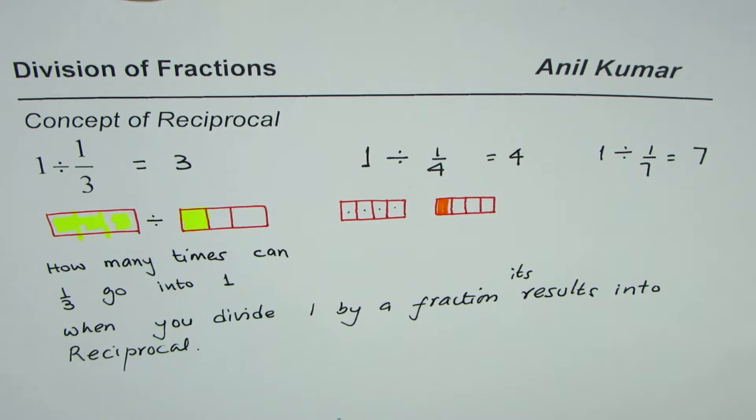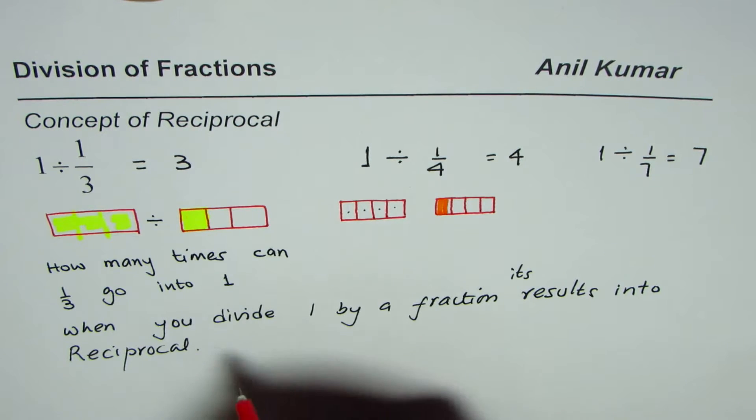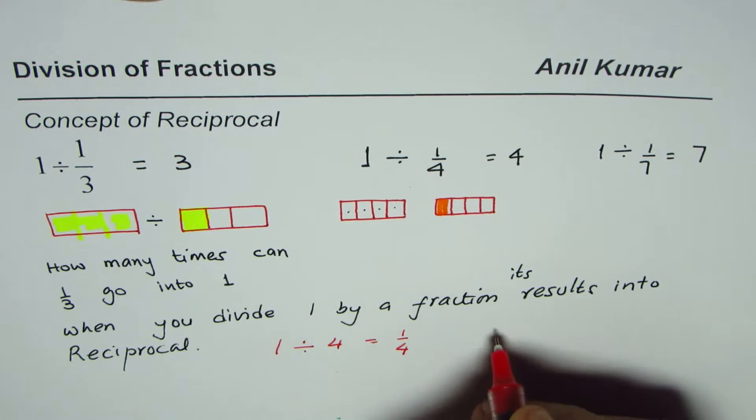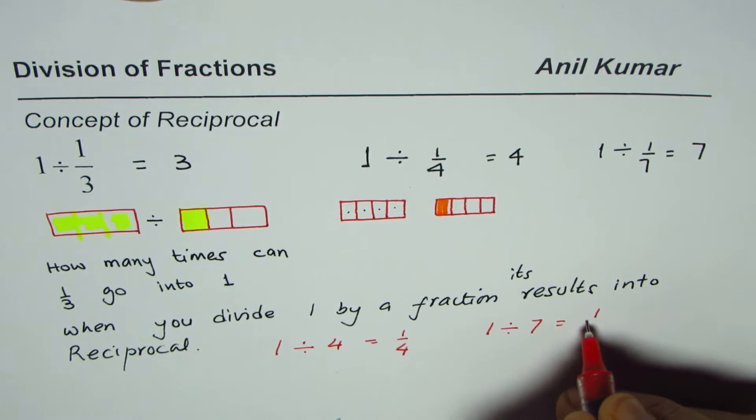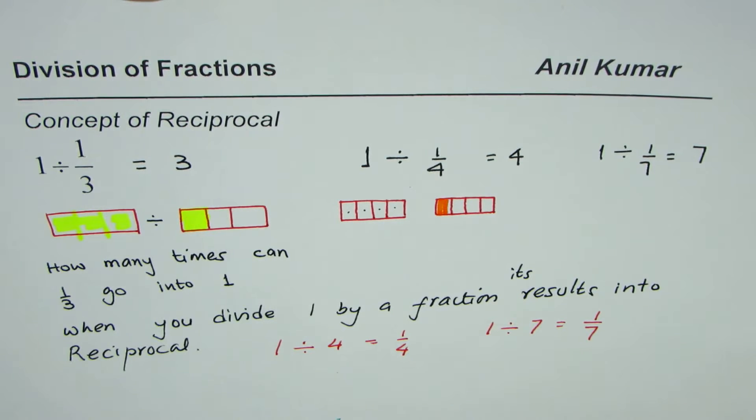So what we learned here is when you divide one by a fraction, it results into reciprocal. Well, this is also true for whole numbers. That is to say if you divide one by four, you get reciprocal of four which is one over four. If you divide one by seven, you get reciprocal of seven. So it works also for the whole numbers.